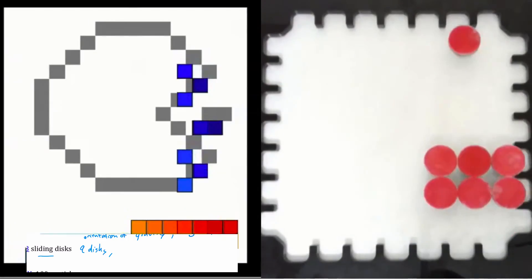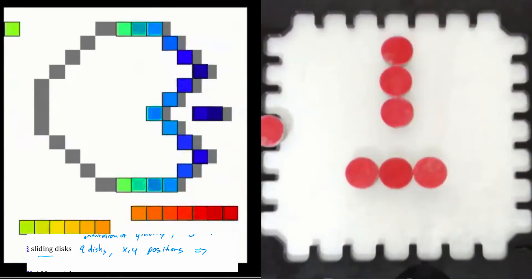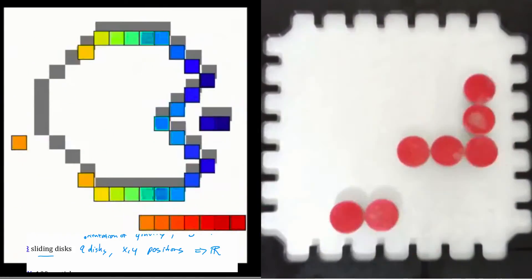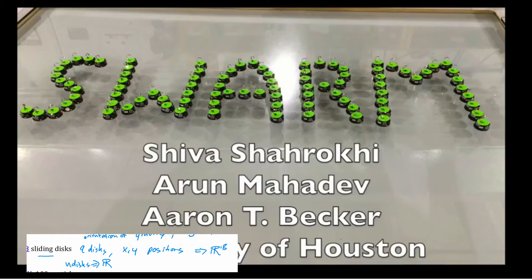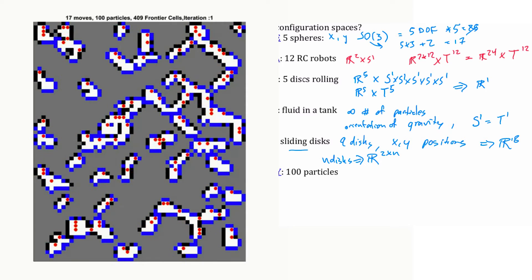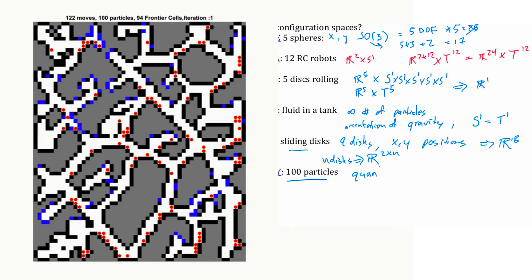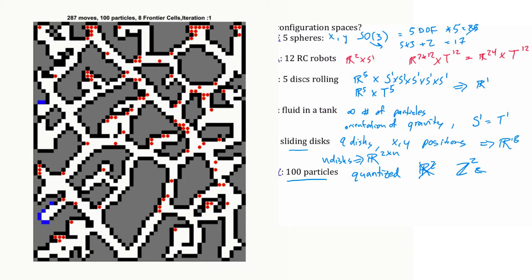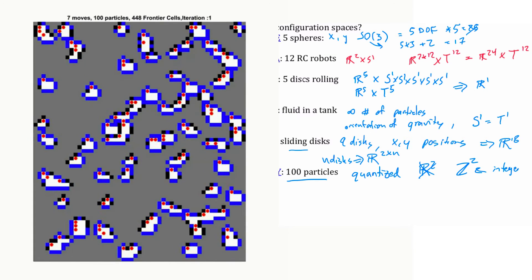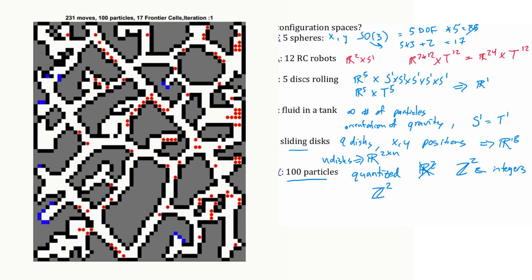For sliding discs, with nine discs all having XY positions, that equals R^18. In general, for n discs that's R^(2n). In another demonstration with a hundred particles that are quantized, we are not moving in R² — instead each particle moves in Z², where Z is the integers. With n particles this is Z^(2n).